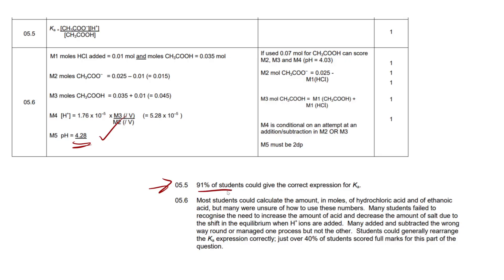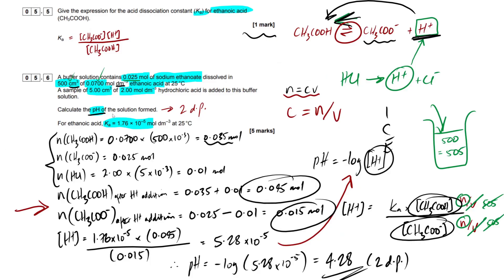Not going to spend much time on this. 91% of students got Ka, super easy. Now let's quickly read through this. Most students could calculate the amount in moles of hydrochloric acid and of ethanoic acid, but many students were unsure of how to use these numbers. Many students failed to recognize the need to increase the amount of acid and decrease the amount of salt due to the shift in equilibrium when H plus ions are added. Many added and subtracted the wrong way around or managed one process but not the other. Students could generally rearrange the Ka expression correctly. Just over 40% of students scored full marks at this part of the question. That's quite a good percentage for this sort of question.